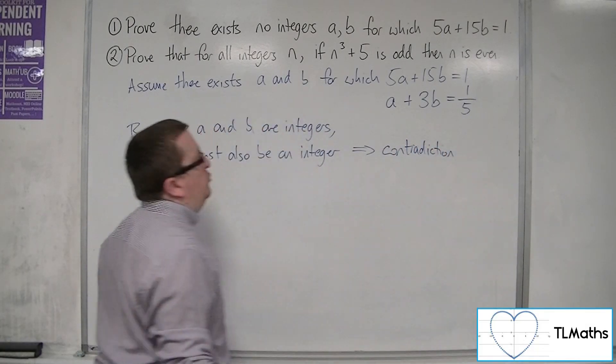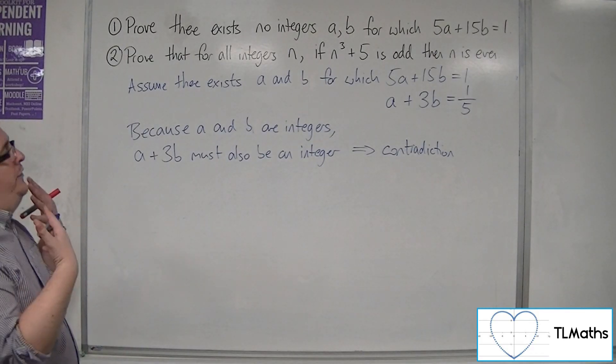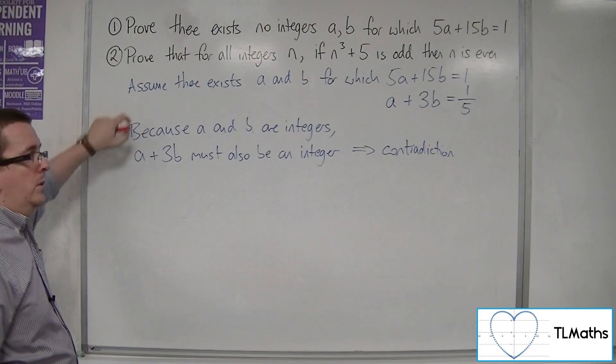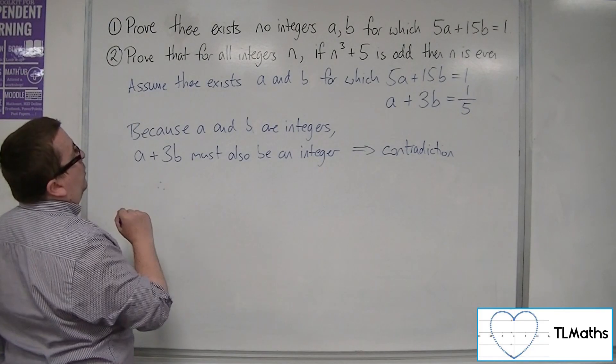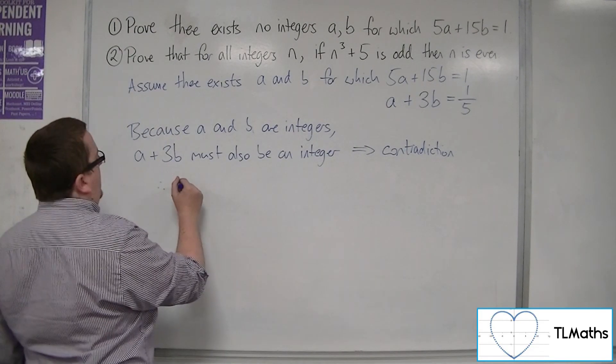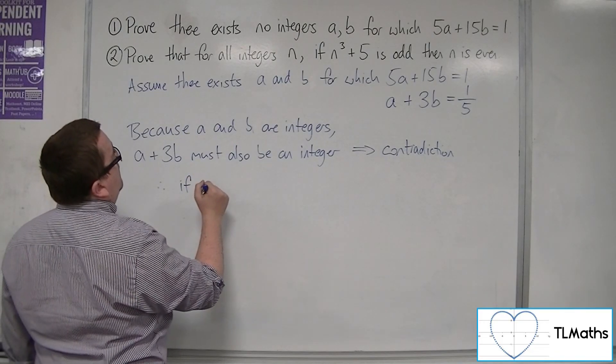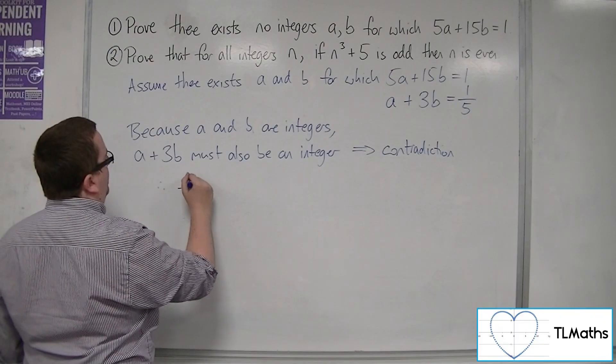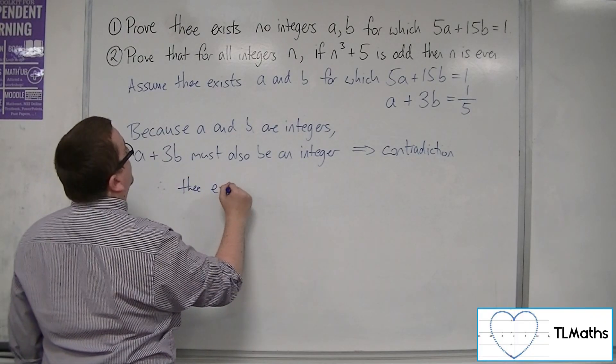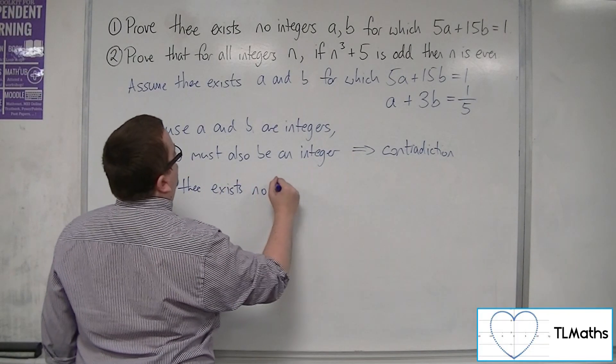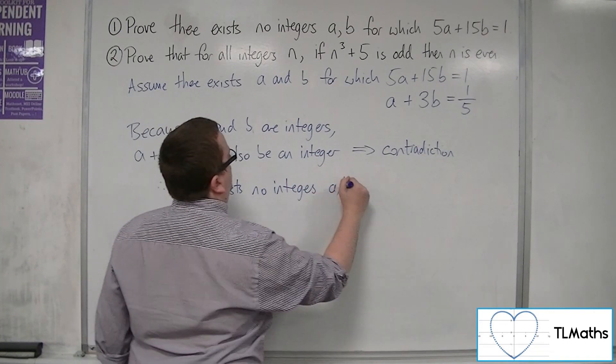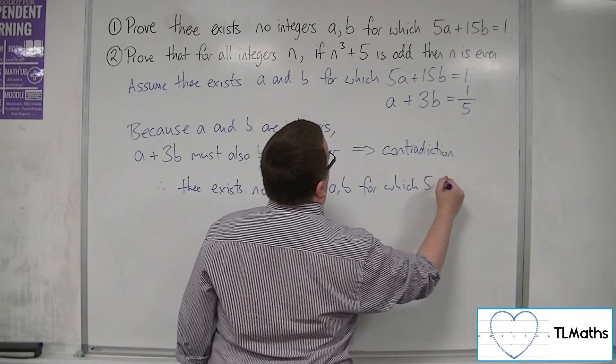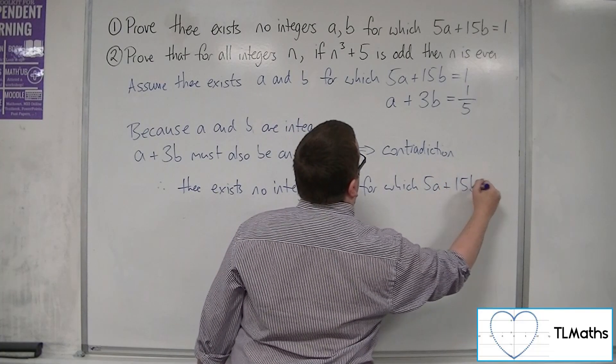And so because there is a contradiction, the original assumption that we made here must be false. Therefore, there exists no integers a and b for which 5a plus 15b equals 1.